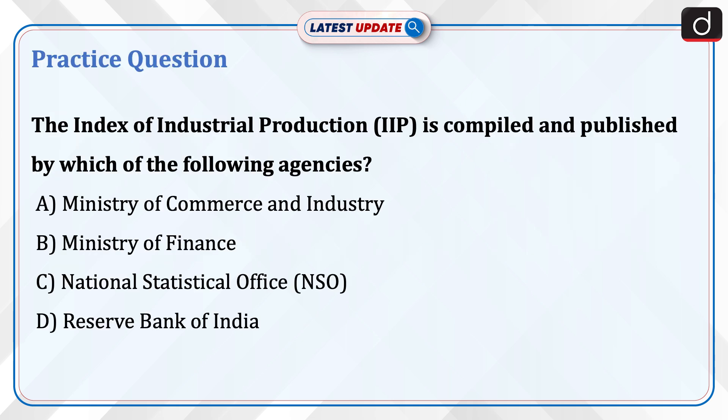Now it's time to do a practice question. The Index of Industrial Production is compiled and published by which of the following agencies? A. Ministry of Commerce and Industry. B. Ministry of Finance. C. National Statistical Office. D. Reserve Bank of India. Send the answer for this question in the comment section.